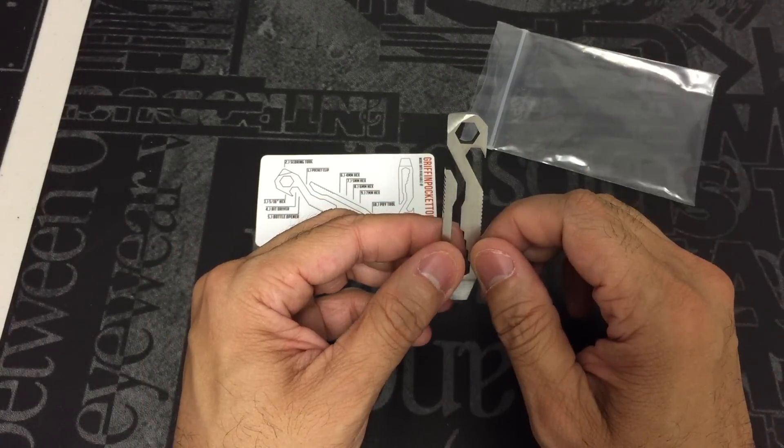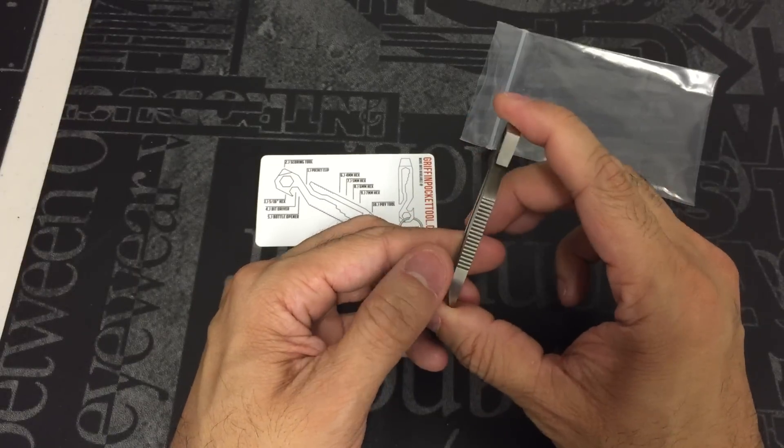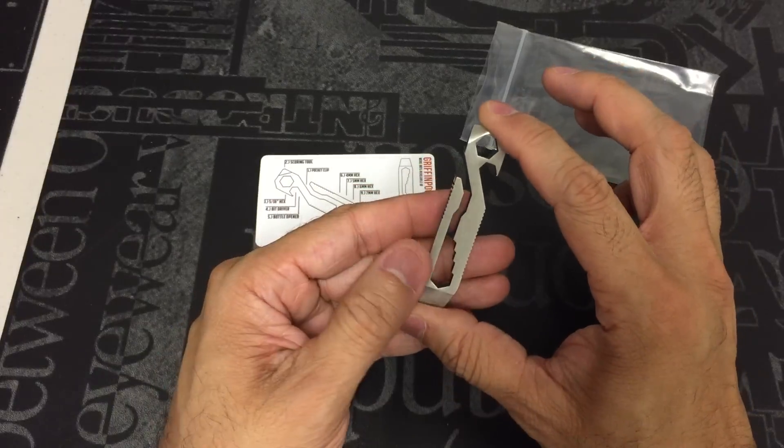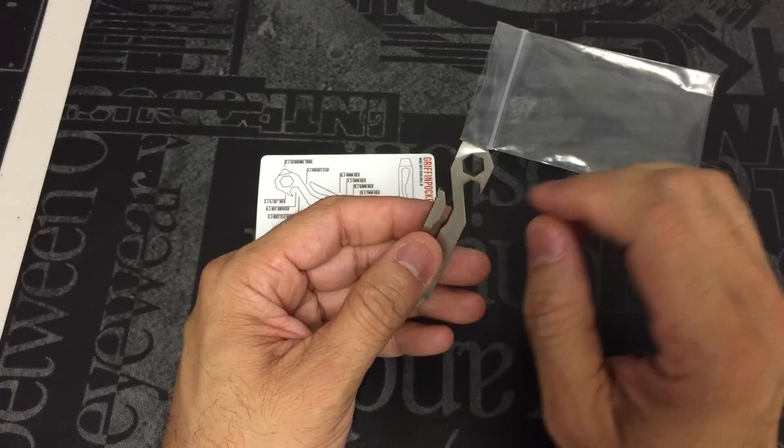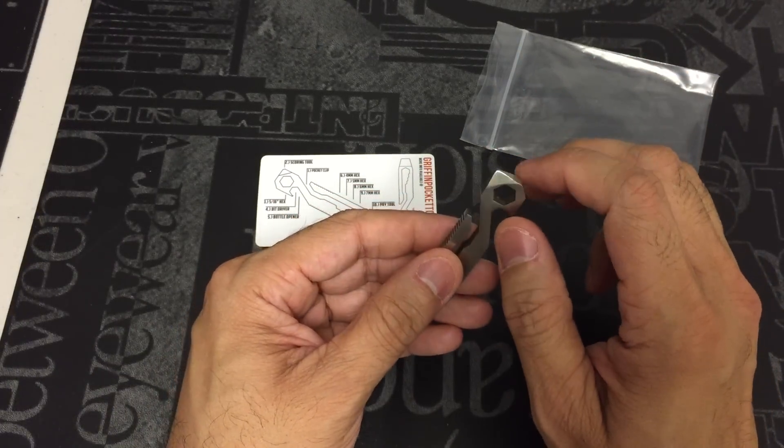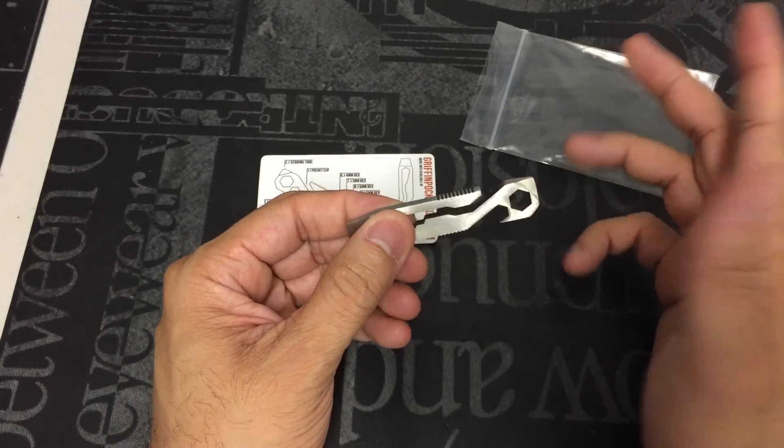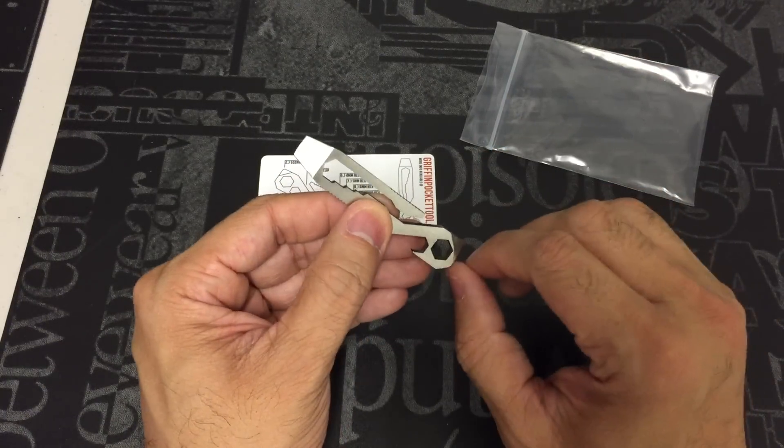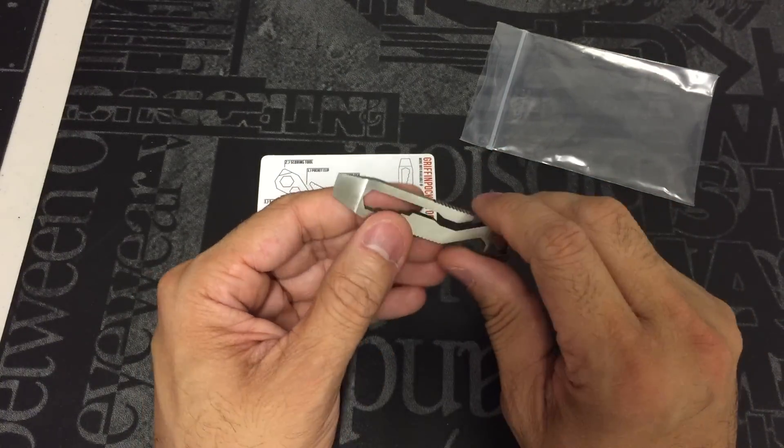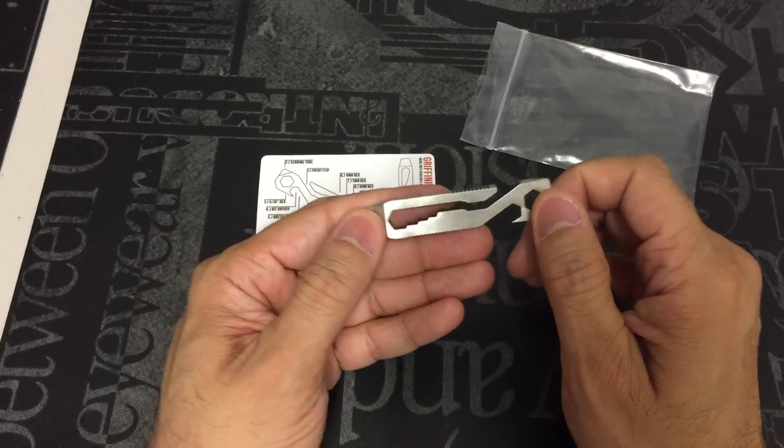Again, you have up to 11 different tools in a very small, very compact form factor that you can attach to your keys. You can throw a lanyard on there, a paracord lanyard or whatever and drop it into your pocket. And it serves dual purpose by having the clip right there. So if you do attach your keys and clip it onto your pocket, then you're good to go and you always have it handy.